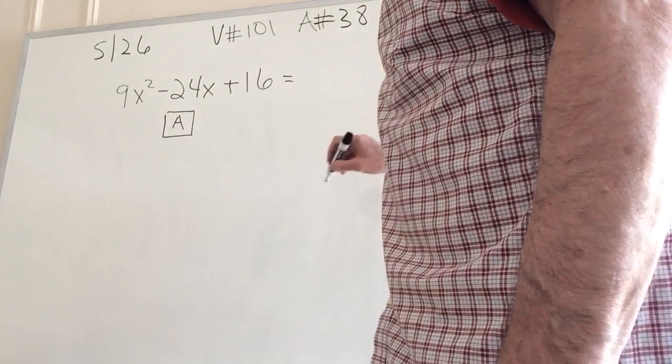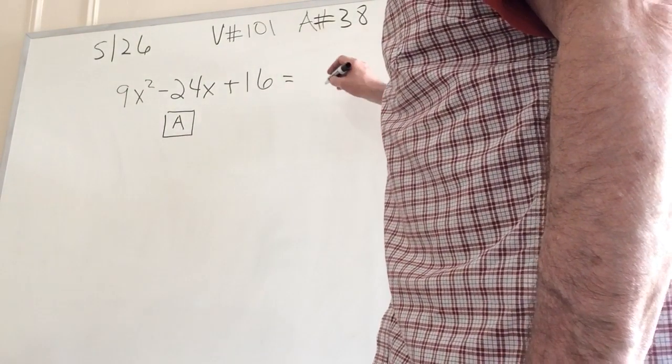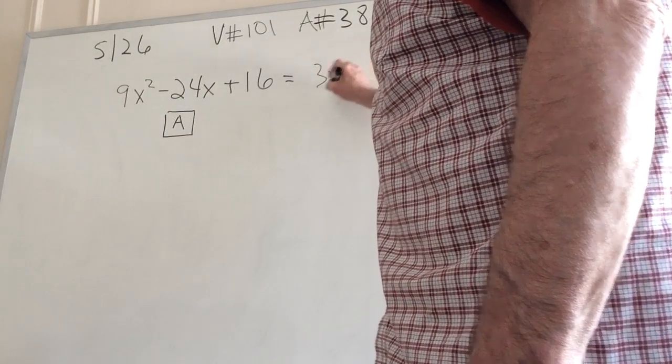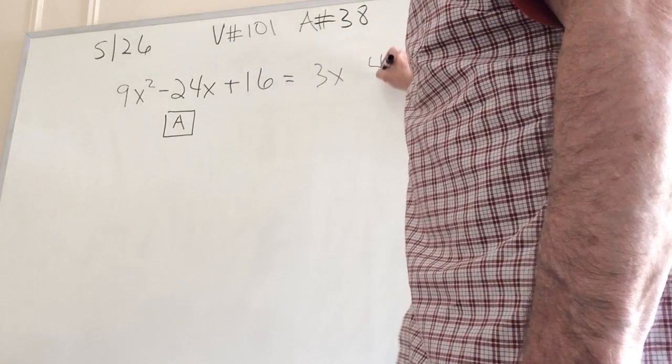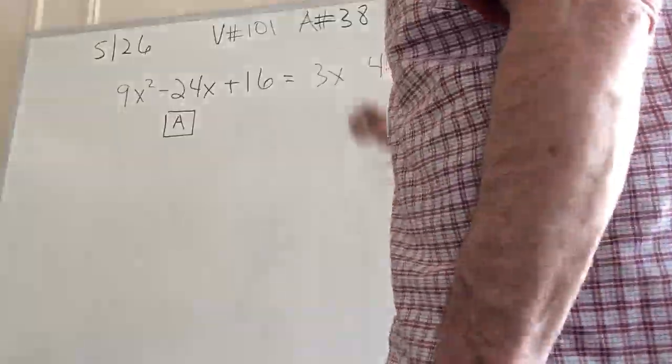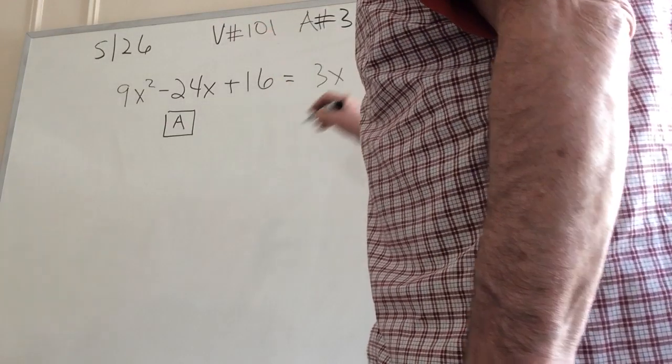So let's just move this over just a little bit here. So when I look at it, as you've been taught already, I take the square root of 9x squared, which is 3x. And I take the square root of the last term here, which is 4. And then I look at the middle term. 3 times 4 times 2 is 24.